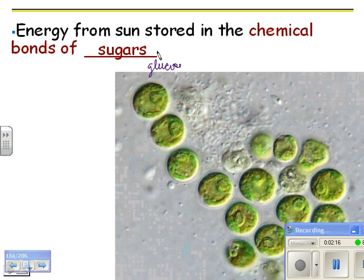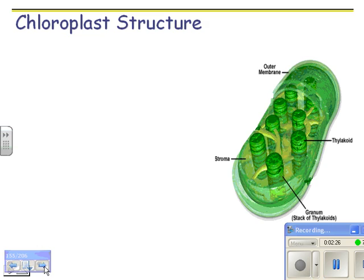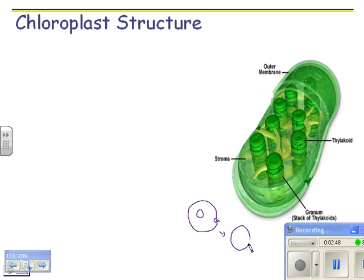Glucose is a sugar with the formula C6H12O6, and these are chloroplasts found within a cell. Chloroplast structure — I'm going to teach this now and we'll come back to it during the photosynthesis unit. It has a double membrane, which gives evidence to the idea that it was once a bacterium. The original cell with a nucleus started to take in a bacterial cell.